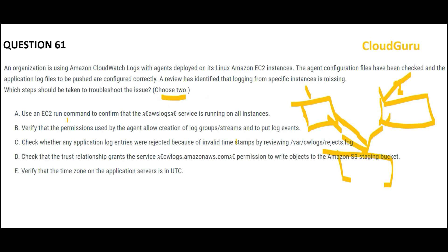My first step would be to run the EC2 Run Command and check if the log agent service is running on all instances. Maybe the agent on that instance is switched off or shut down, so I need to check whether the agent is running. Option B also looks correct — check if the agent is installed and whether it has permission to create log streams and put log events, because missing permissions can also be an issue. These are my two answers.